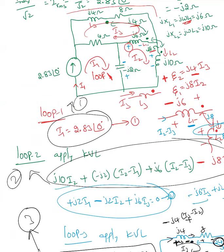If you mess up one sign — say you write minus instead of plus — I'll take off five points. If you make two or three such mistakes, you'll lose a lot of points. Please come see me if you don't understand the dot convention, or send me an email and I can have a Zoom conversation to explain the concept again. Thank you. The next example will use the dot convention with Thevenin's theorem.